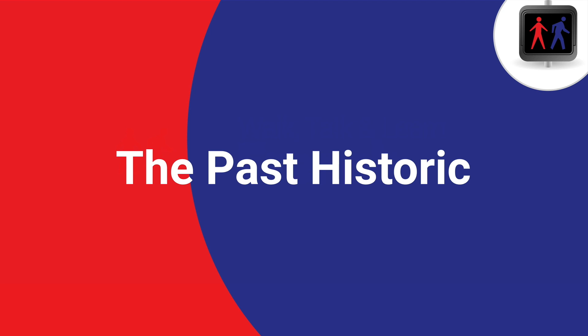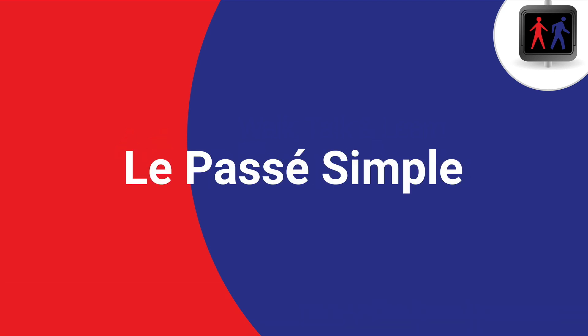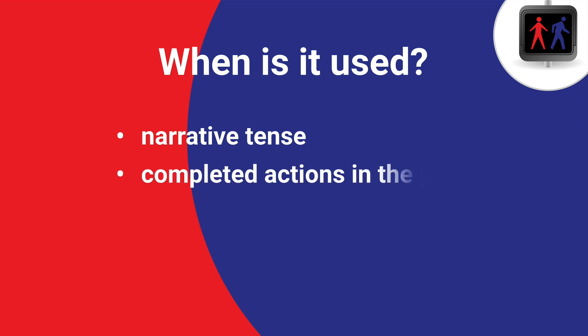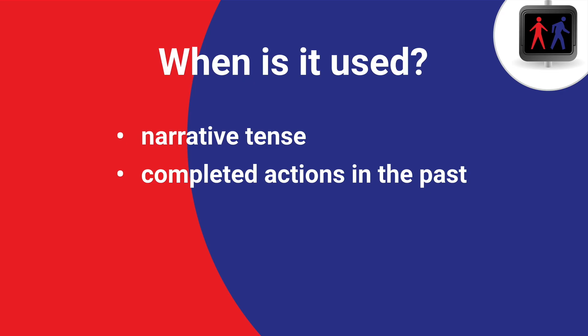Let us take a closer look at the past historic. This tense is also called le passé simple — it's the French name for the tense. It's a tense that's used very much as a narrative tense; it's a tense that recounts events. If you're telling a story, these are the events of the story. It's a tense used to talk about completed actions in the past, and the most likely scenario is that you would come across this tense in literature if you're reading a novel in French — you'll be reading the events of the story in the past historic.